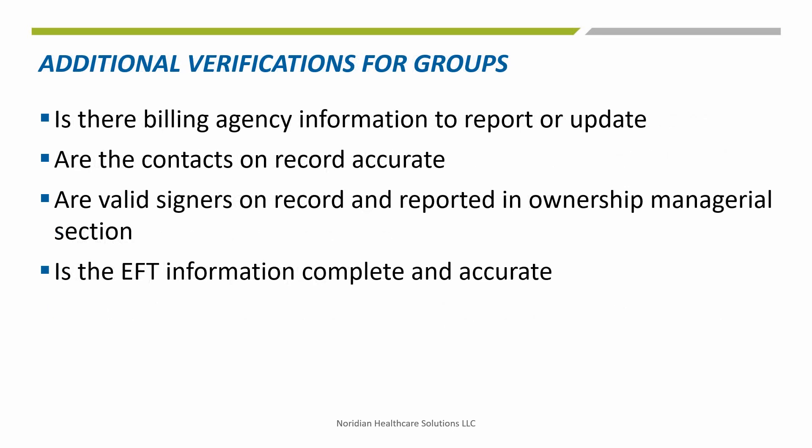The application is almost completed — only a few more things to review. If your entity has a billing agency, verify they are listed on the enrollment and that the information is accurate. Check that all contacts that should be listed are present, and remove or update any outdated contacts. Verify that authorized and delegated officials are valid and listed in the ownership and managerial section. For EFT, confirm all financial information is accurate to avoid payment issues. If needing to update, submit a voided check or bank letter along with the changes; if all is correct, no changes are required.